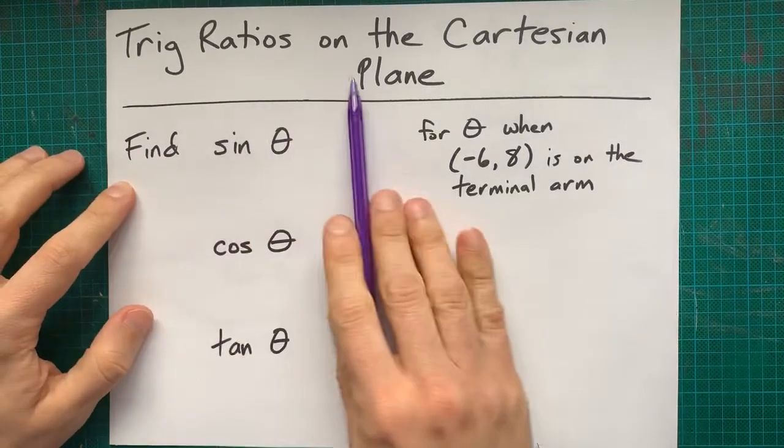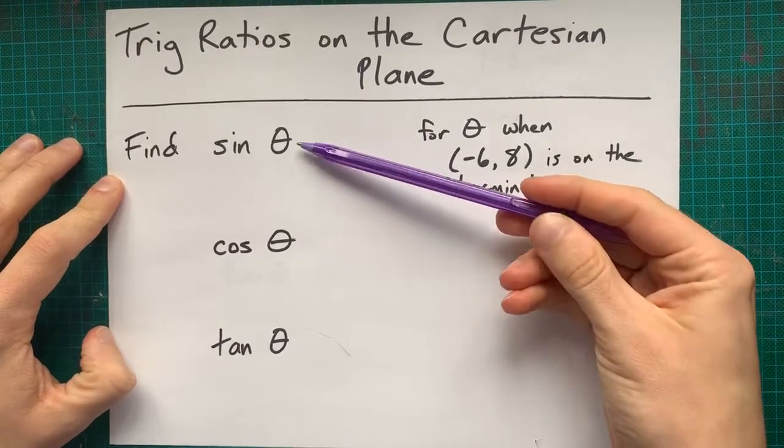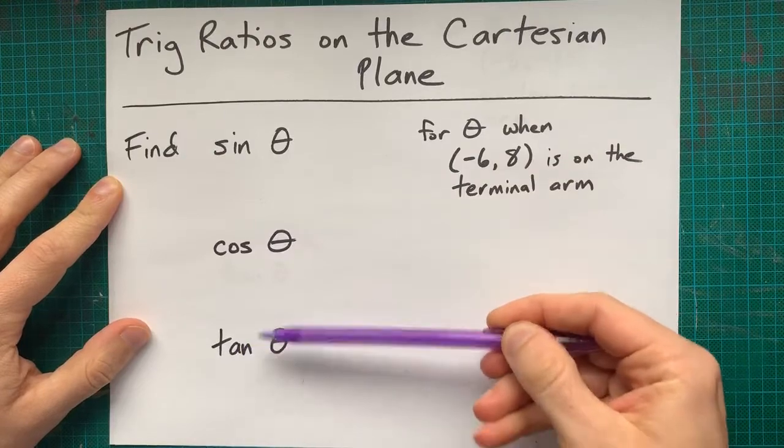Short video about trig ratios on the Cartesian plane. You're often going to be asked for the primary trigonometric ratios, sine, cos, and tan of an angle,